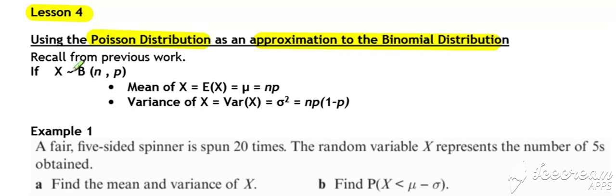So for a binomial, we know its mean is found by doing np and the variance of a binomial is np times 1 minus p.